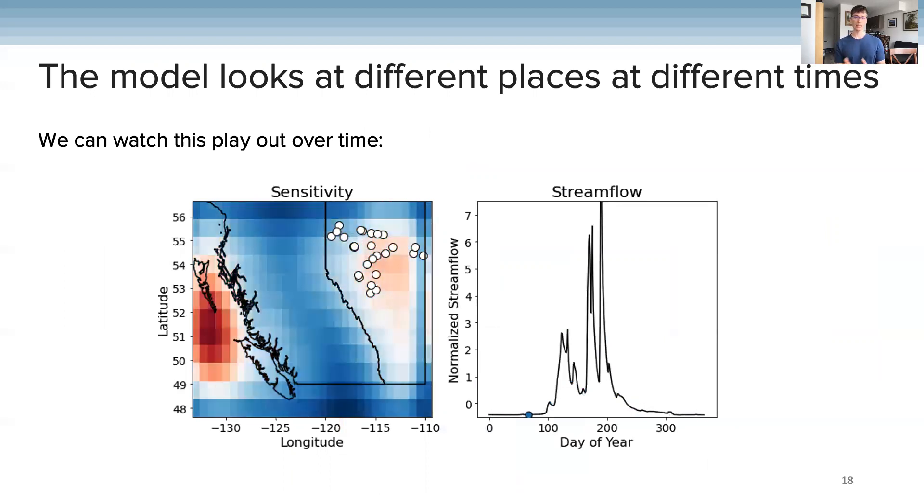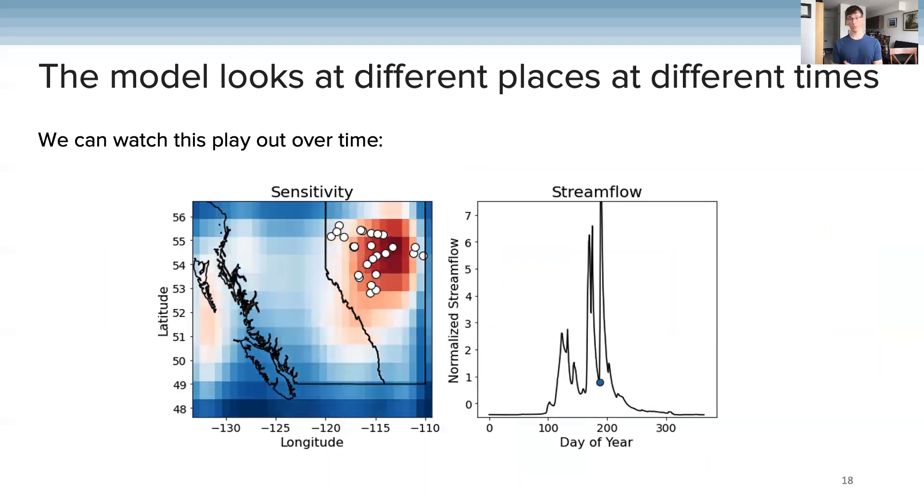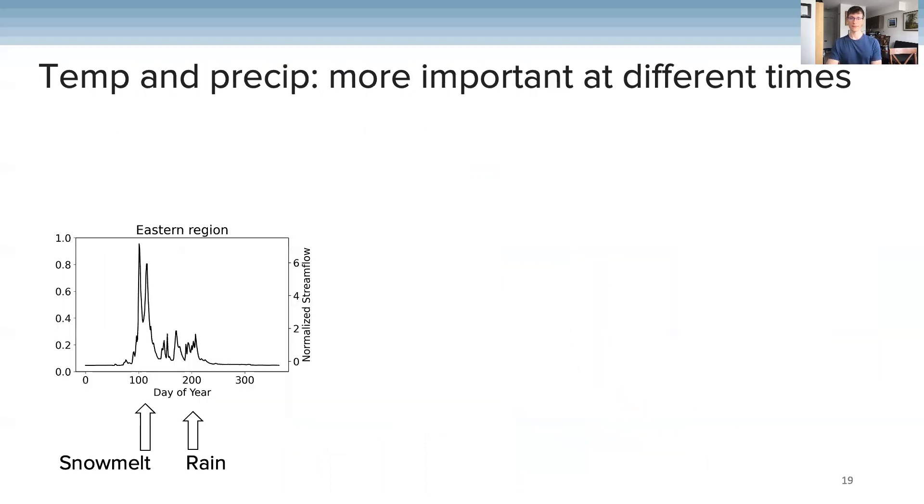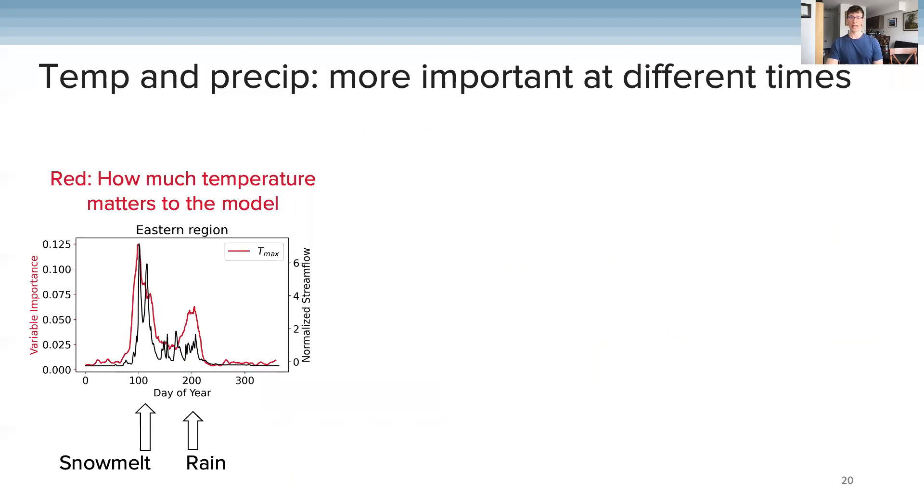But we can also ask, is it more looking at temperature or precipitation? Consider flow in eastern Alberta. First, there is a flow peak in spring due to snow melt, and then flow in summer is driven by rainfall. Here in red is how much the temperature input matters to the model throughout the year. We find that the model is most concerned with temperature during spring when the snow is melting due to rising temperatures.